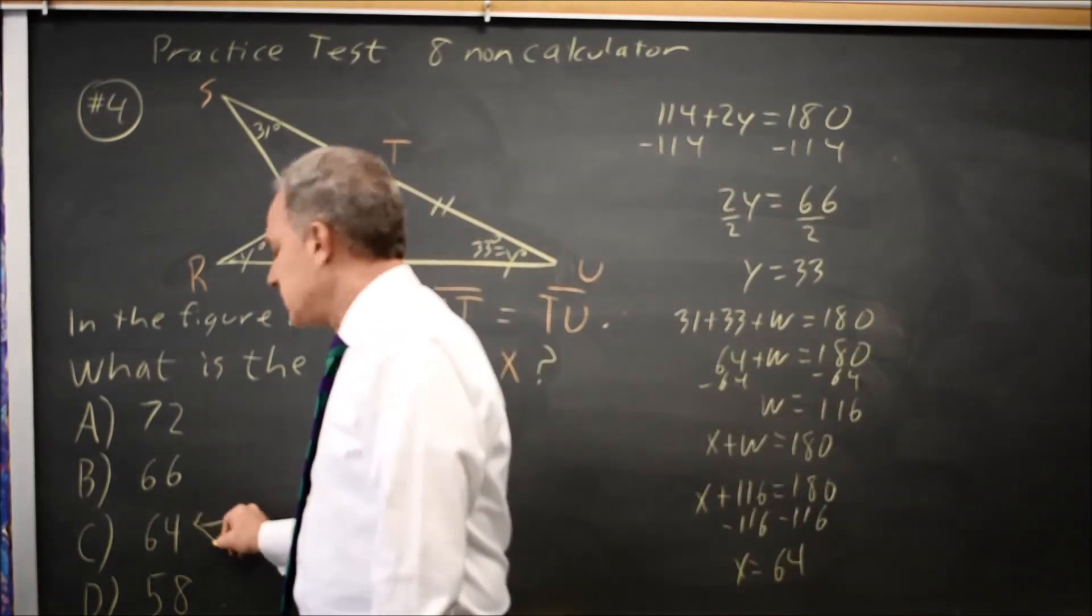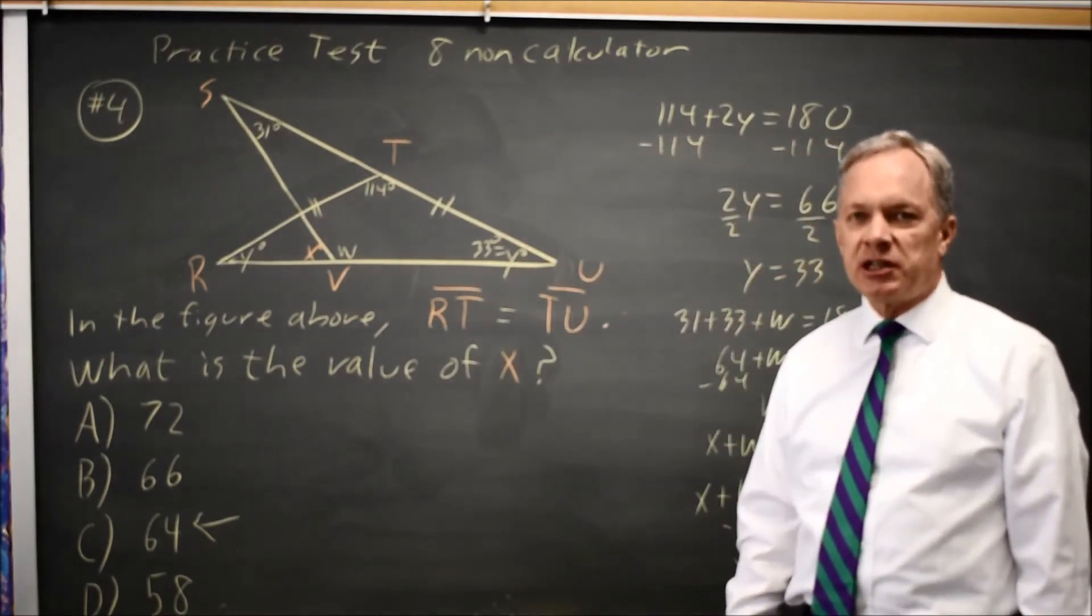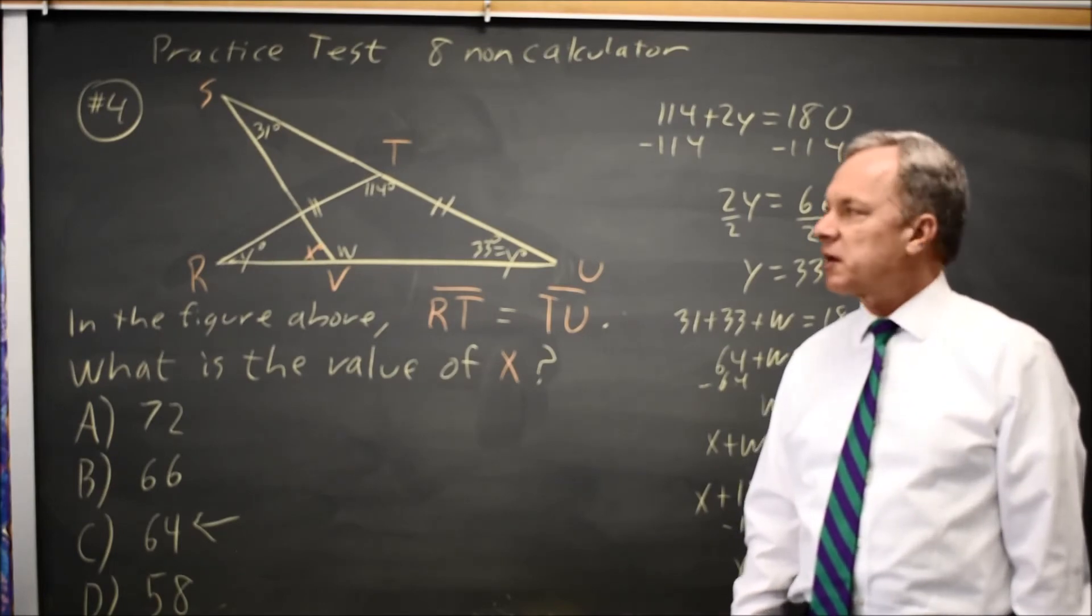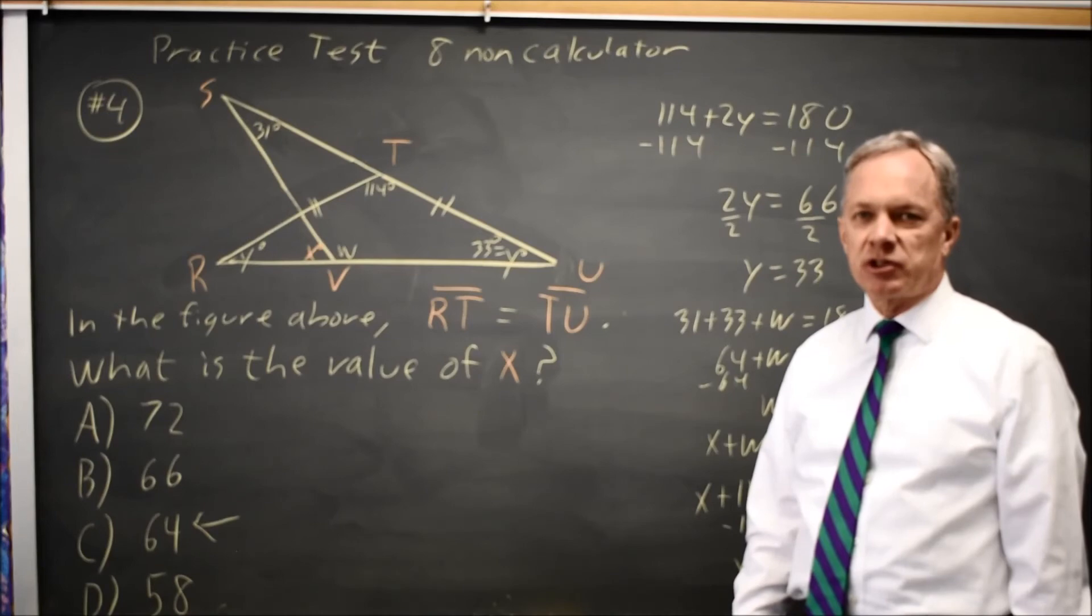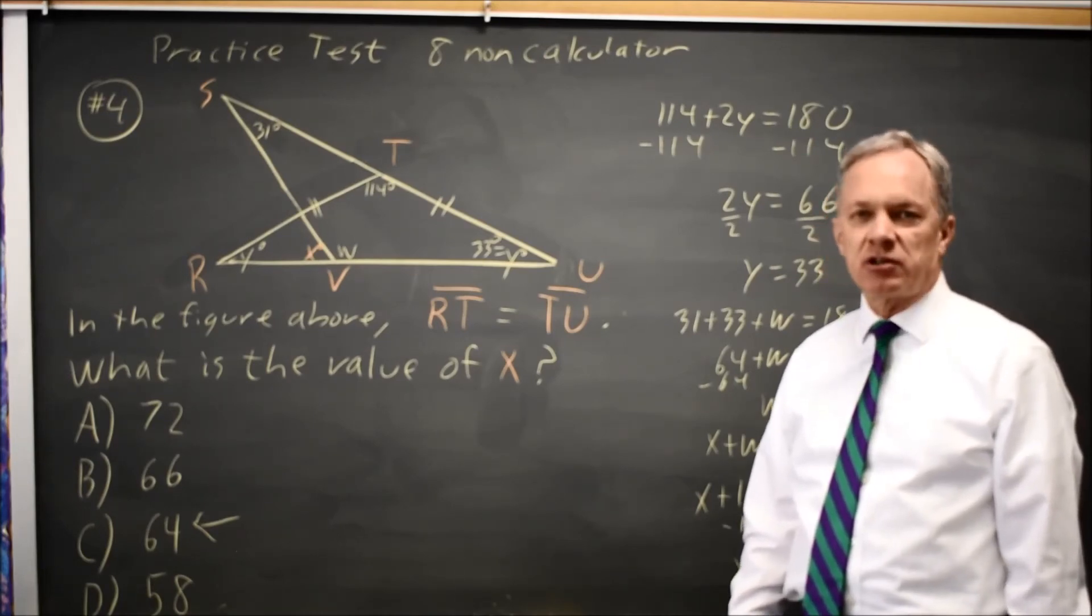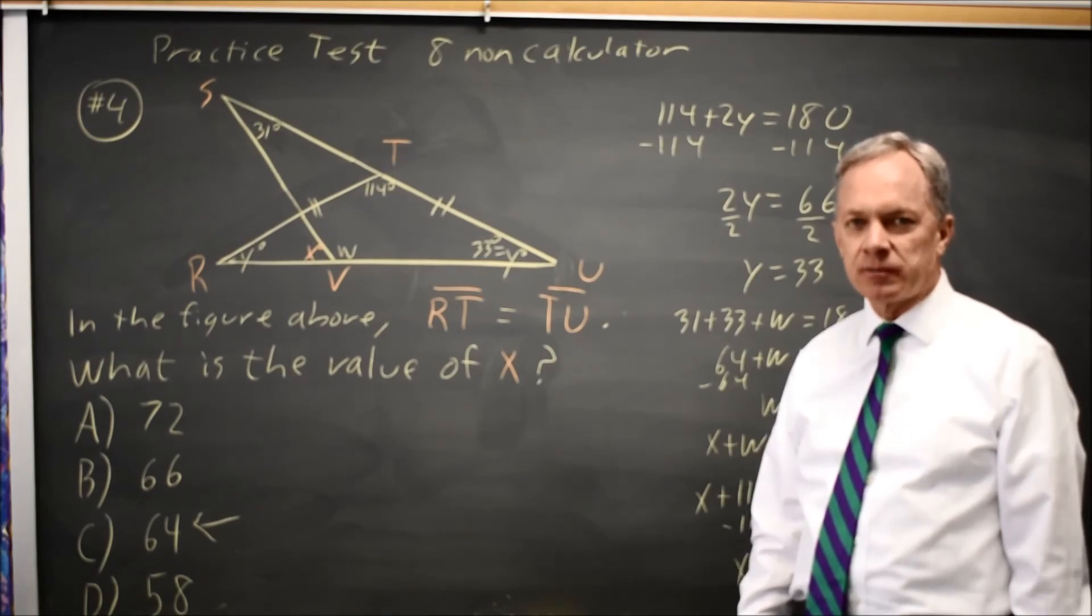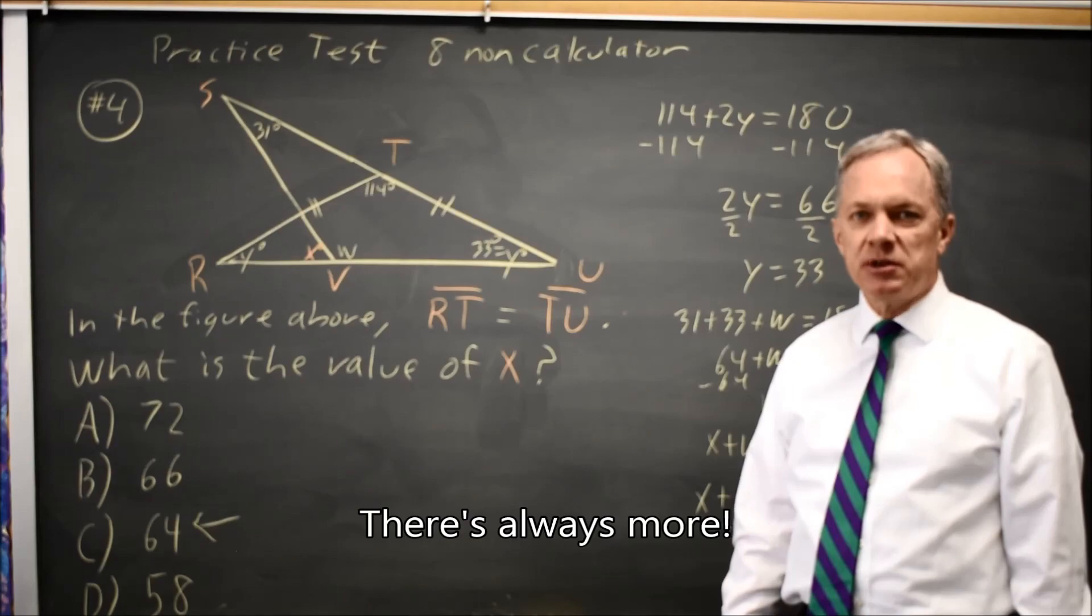Which would be choice C. The College Board will often ask you about the angles in a triangle or a collection of triangles and you work successively using the fact that the angles of a triangle add up to 180 and that if two sides of a triangle are equal, the angles opposite are also equal. Come back soon for my next math video. With math there's always more.